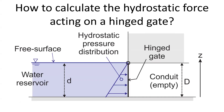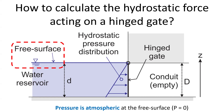Let us look first at the simple case whereby the water depth in the reservoir equals the height of the conduit. We use the notation small d for the water depth in the reservoir and big D for the internal height of the conduit. A key feature is the presence of the water surface in the reservoir where the pressure is atmospheric — that is, pressure P relative to atmospheric pressure equals zero.